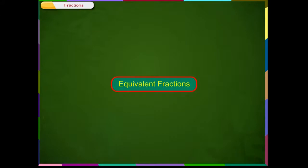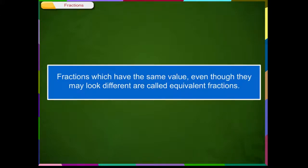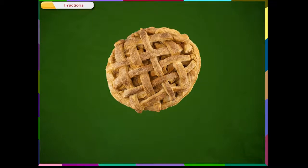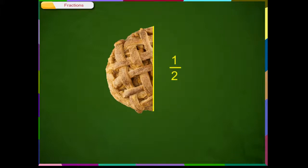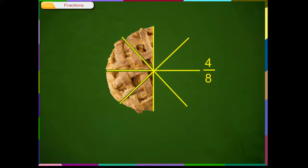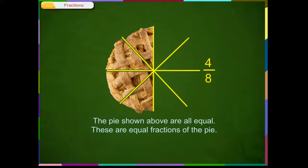Equivalent fractions. Fractions which have the same value, even though they may look different, are called equivalent fractions. Consider a full pie as shown on the screen. The example uses a pie cut into equal pieces to show equivalent fractions. This is a half pie. Here is 2/4ths of a pie. This is 4/8ths of a pie. The pies shown above are all equal — these are equivalent fractions of the pie.